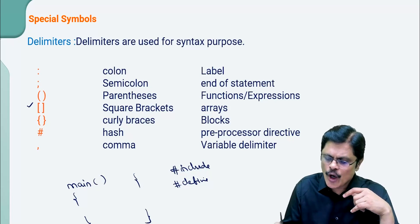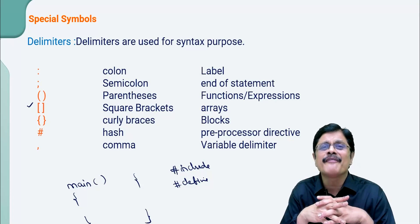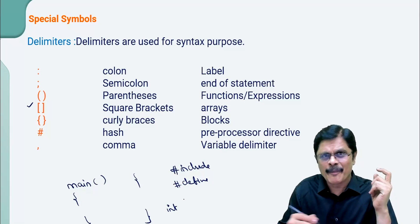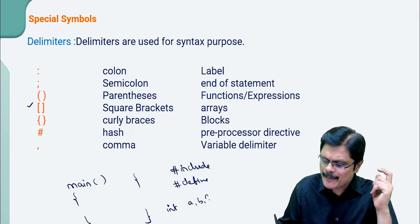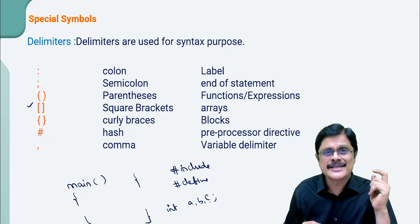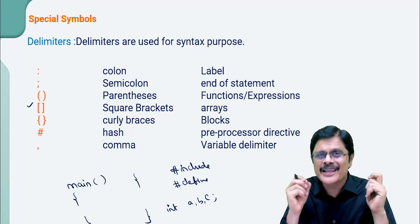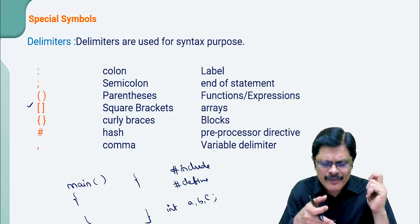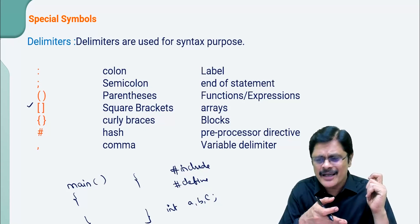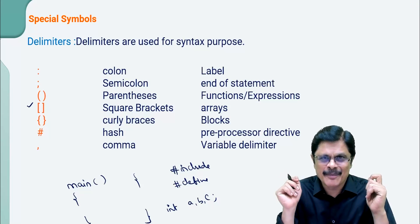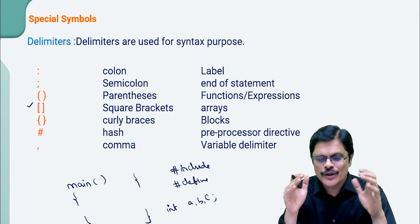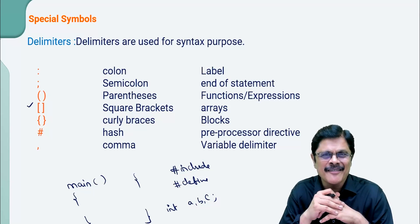The comma operator is used as a variable delimiter. Later on, we learn to create variables of a particular type — you can create multiple variables by separating them with a comma. So the comma delimiter is used as a variable delimiter. These are some special symbols.